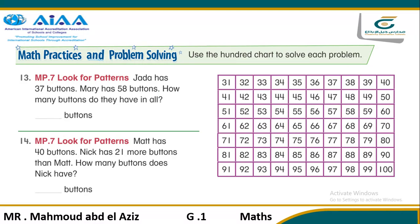Jada has 37 buttons. Mary has 58 buttons. How many buttons do they have in all? You should add the two numbers: 37 plus 58. Where is 37 on the 100 chart? That's 37. The tens digit of 58 is 5, so we go down 5 steps: 1, 2, 3, 4, and 5, reaching 87. The ones digit is 8, so we count 8 steps: 1, 2, 3, 4, 5, 6, 7, 8. So our sum is 95.